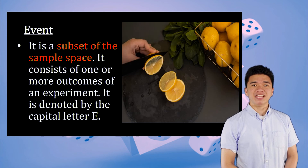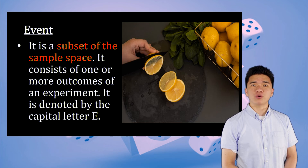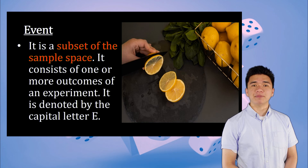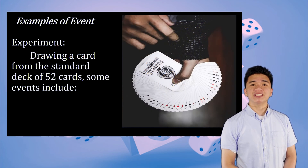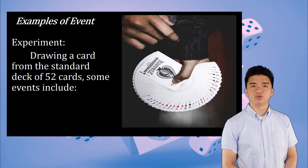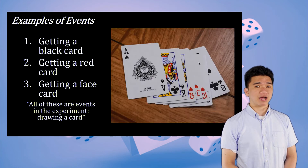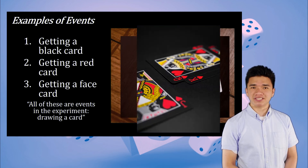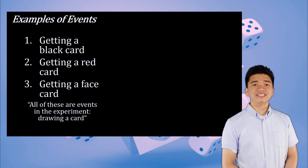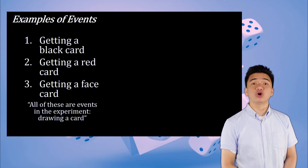Event is a subset of the sample space. It consists of one or more outcomes of an experiment and is denoted by the capital letter E. For example, for an experiment of drawing a card from a standard deck of 52 cards, some events include getting a black card, picking a red card, and choosing a face card.